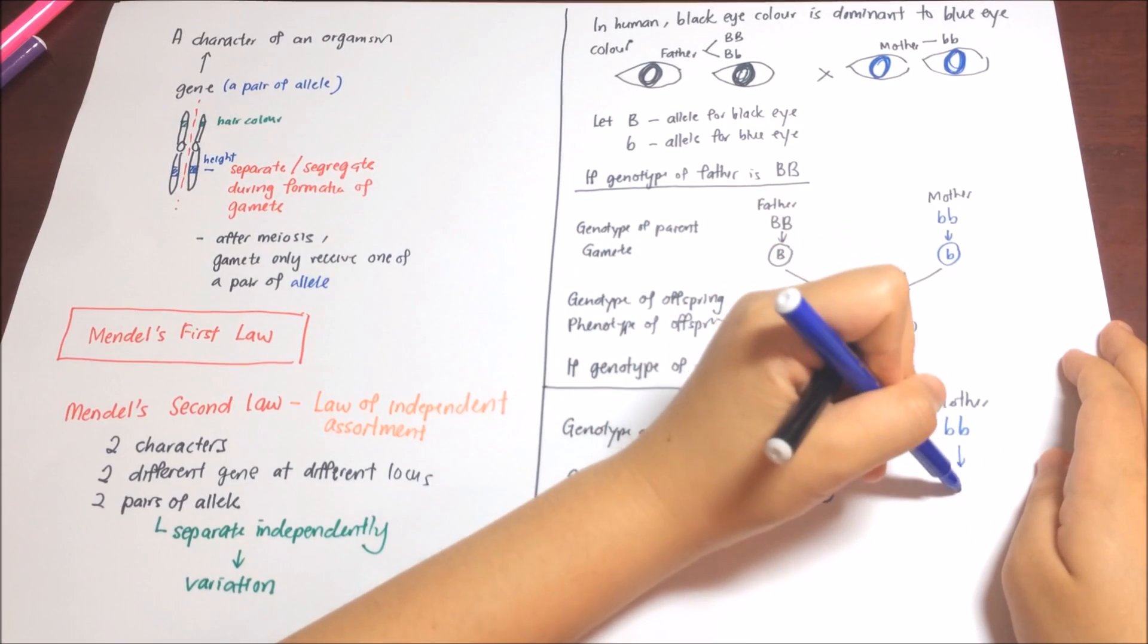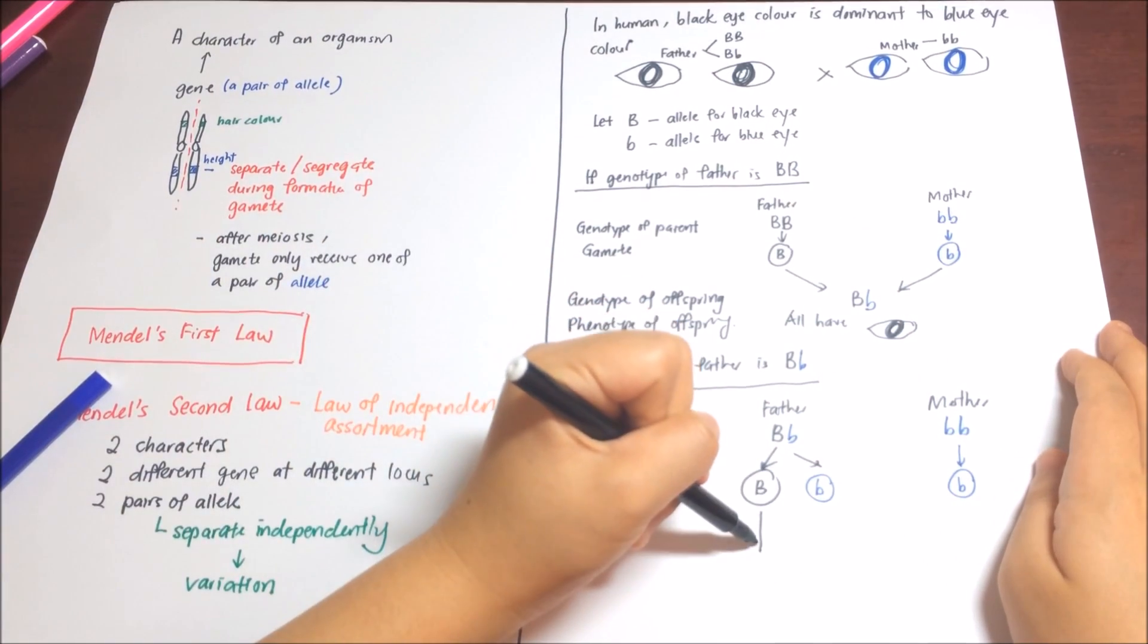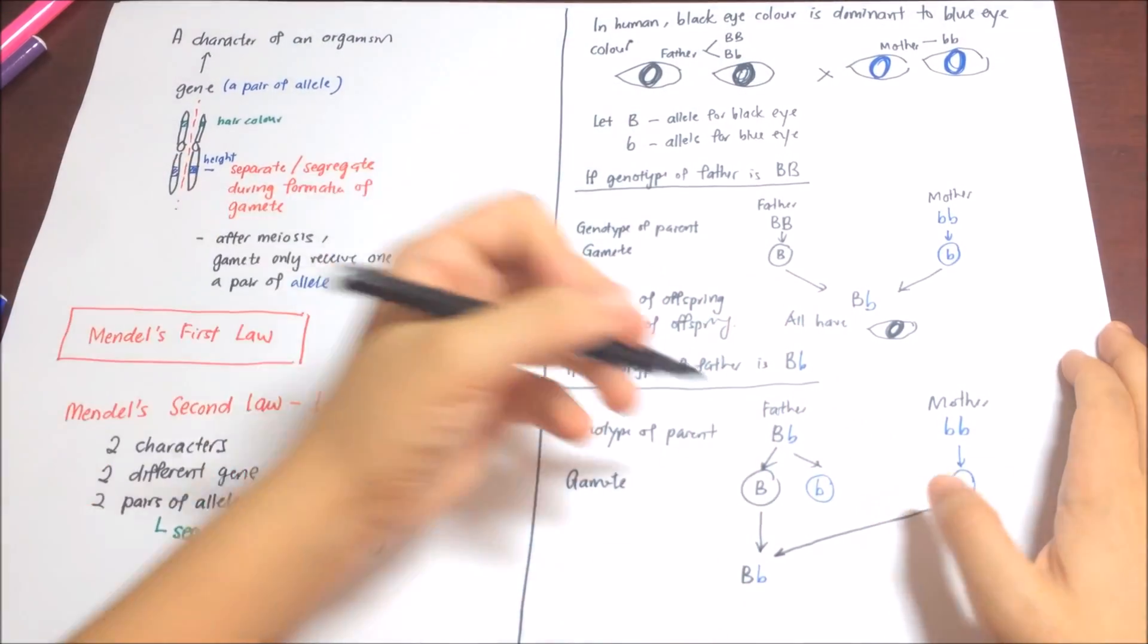Here, the possible gametes produced by father would be the dominant allele, the one with dominant allele and another one with recessive allele.